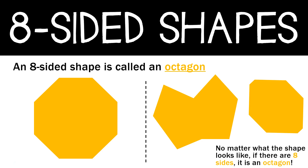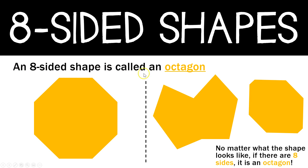An eight-sided shape is called an octagon. When you think about an octagon, you might instantly think of a stop sign because stop signs have eight sides. But again, no matter what the shape looks like, if there are eight sides, it is an octagon. Every shape has eight sides but they don't look the same — and that's okay because a shape with eight sides is called an octagon. Pause the video and write down: An eight-sided shape is called an octagon.